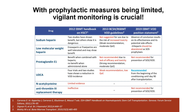Regarding prophylaxis: defibrotide is not registered for prophylaxis; however, off-label it may be used, for instance for patients with osteopetrosis. The only drug recommended for prophylaxis is ursodeoxycholic acid, which should be used from the beginning of conditioning until day 90 post-transplantation.